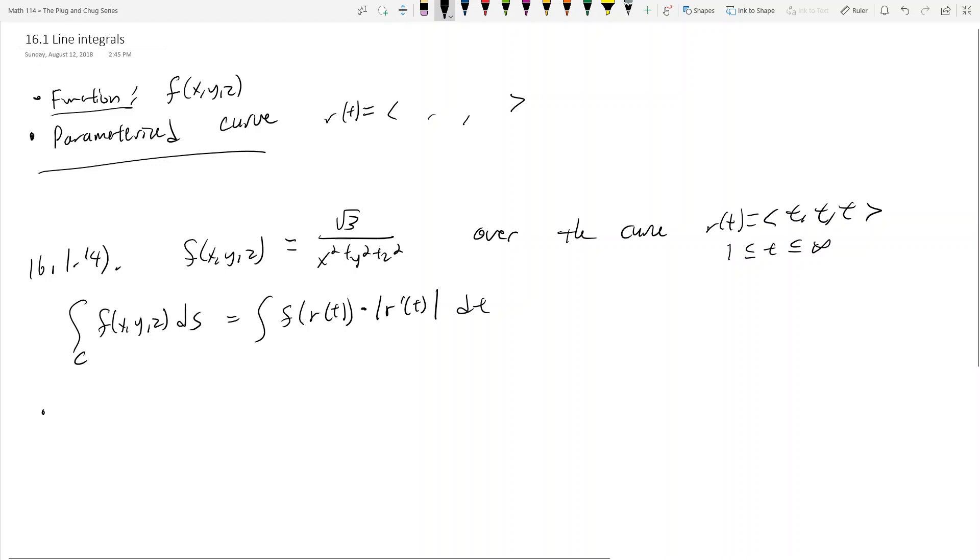And how do we evaluate this? We really evaluate this by doing f at r of t dotted with the magnitude of r prime of t dt. So what does this mean? Let's calculate f of r of t. So f was root three over x squared plus y squared plus z squared. Essentially, what we want to do is we want to plug in the components of r of t into the function. So this turns into root three divided by, what is x? x in r of t is t, so now we get t squared. What's y? y is also t plus t squared, and then we got z, which is also t plus t squared. And now f of r of t is really root three over three t squared.